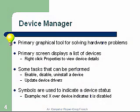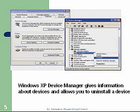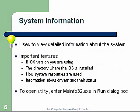Symbols are used to indicate device status. For example, a red X over the device indicates it's been disabled. Here are some windows to show you the XP Device Manager. System Information is used to view detailed information about the system — another very important tool. Important features include: the BIOS version you are using, the directory where the OS is installed, how system resources are used, and information about drivers and their status. To open this utility, you can enter msinfo32.exe in the Run dialog box.